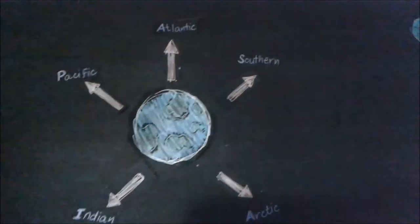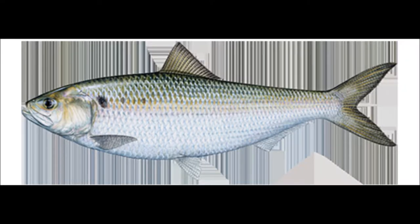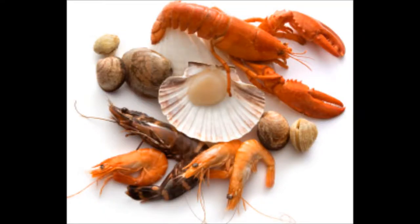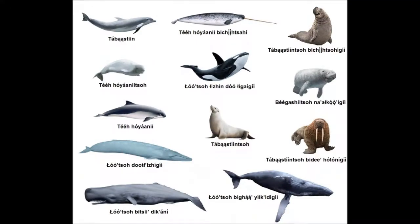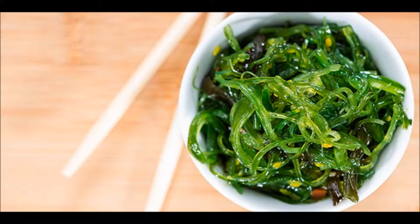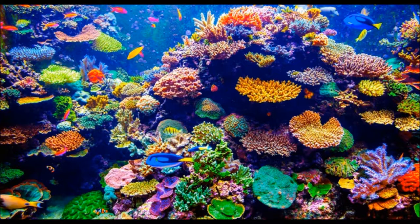These nutrient-rich waters teem with life, which provide humans with substantial supplies of food, mainly fish, but also shellfish, mammals, and seaweed, which are both harvested in the wild and farmed. The most diverse areas are surrounded with great tropical coral reefs.